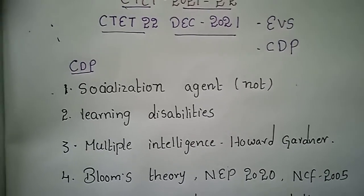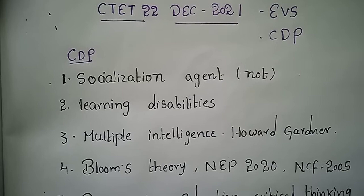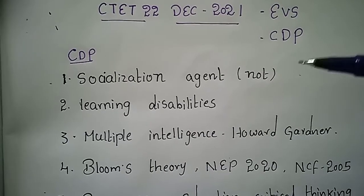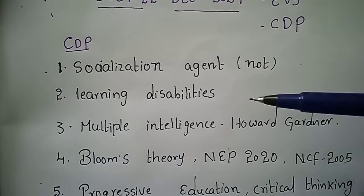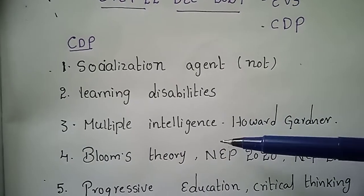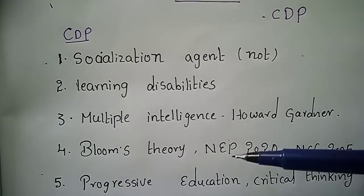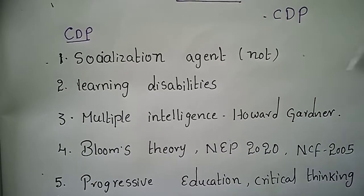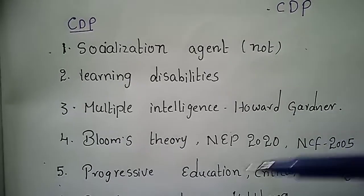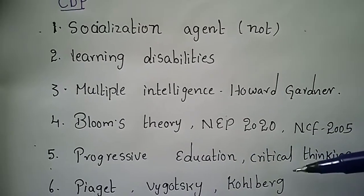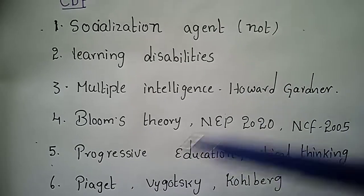In Child Development and Pedagogy, they asked about socialization agents, which is not directly related to socialization agents. Other topics included learning disabilities, multiple intelligence, Gardner's theory, Bloom's theory, NEP 2020 — which is very new — NCF 2005, progressive education, and critical thinking. The learning theory section was extensive.